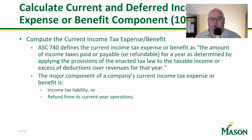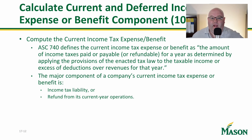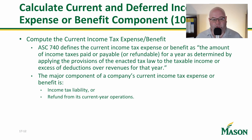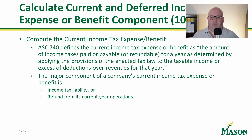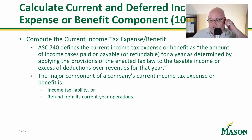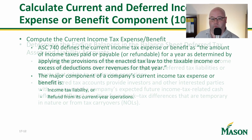ASC 740 defines current tax expense or benefit as the amount of income taxes paid or payable for a year, determined by applying tax provisions of the enacted tax law to taxable income. The major component of a company's current tax expense or benefit is the current income tax liability or refund from current year operations. For example, if estimated payments assumed a million-dollar liability and it comes in at $800,000, the company gets a $200,000 refund.